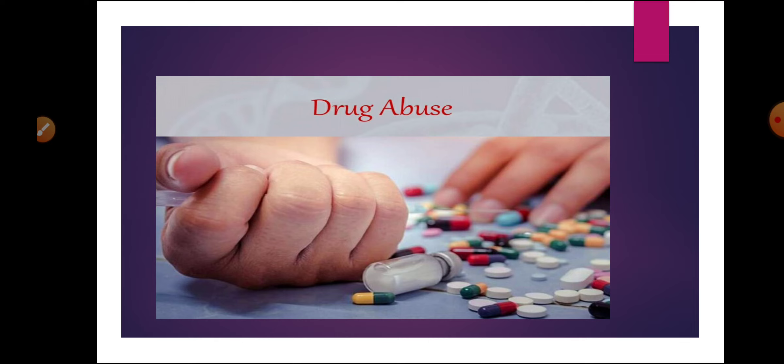We will cover this topic in two parts. First of all, what is meant by the word drug? A drug is a chemical substance other than food which is used in the prevention, diagnosis, or treatment of a disease in man or in animals. Or we can say that a drug is a chemical substance which, when taken, alters body functions for the benefit of the person.